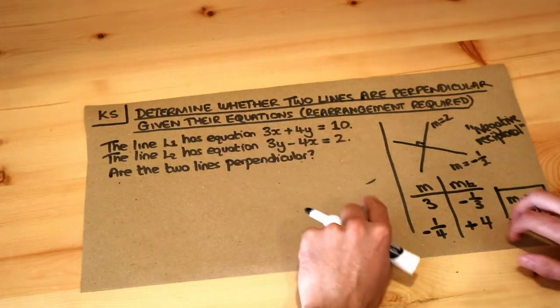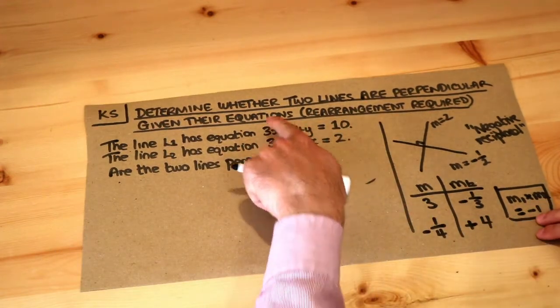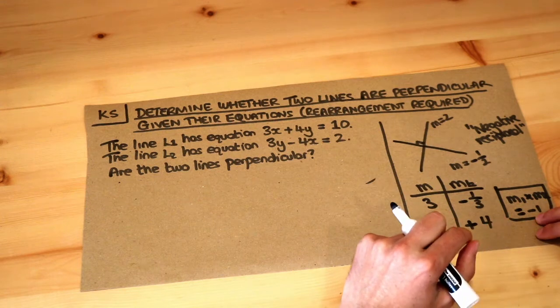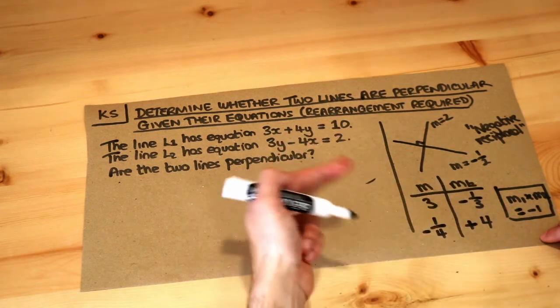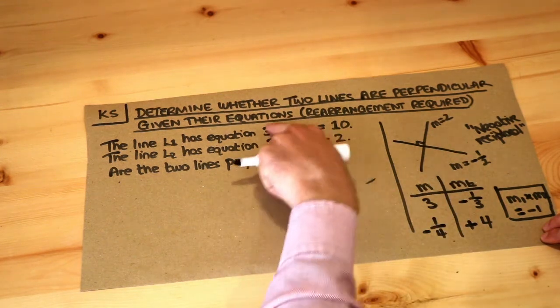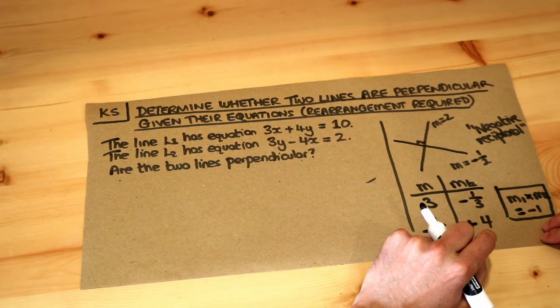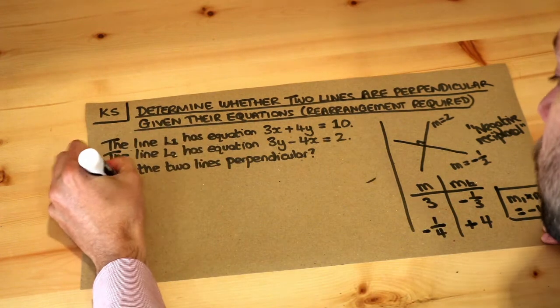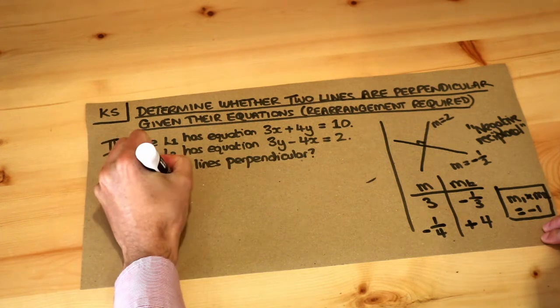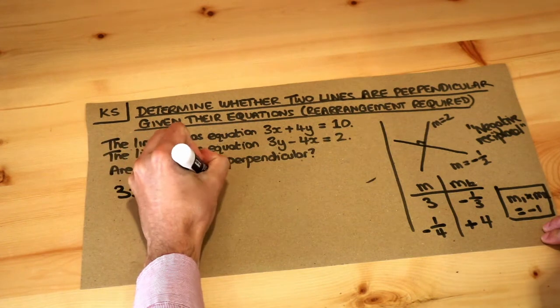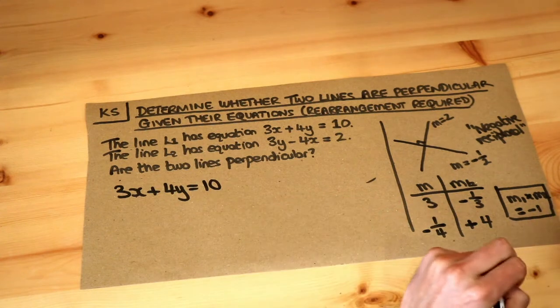Now it's slightly hard in this problem because the equations of our lines are not in the form y = mx + c. But we explored that in another video previously—how to find the gradient of a line that's not in the form y = mx + c. We just need to rearrange each equation to make y the subject. You want to get y on its own so we can then read off the gradient.